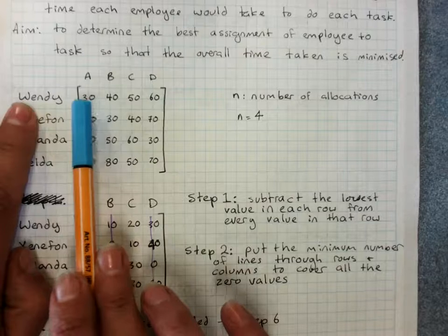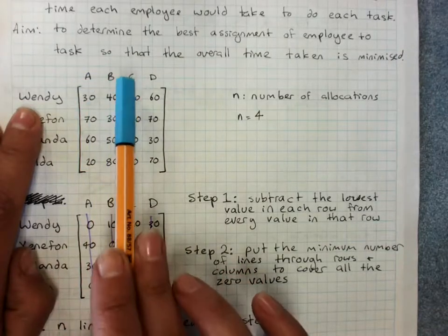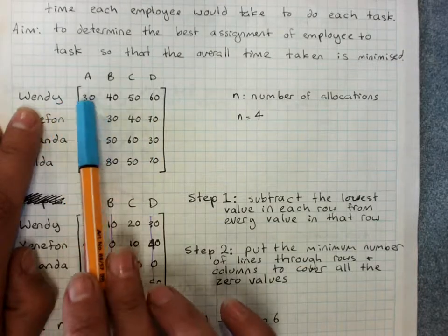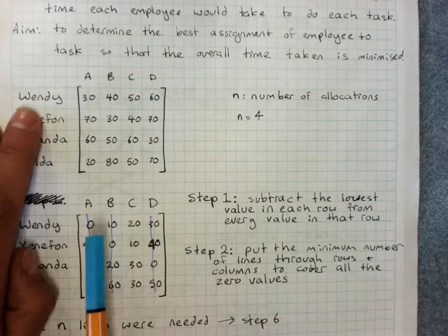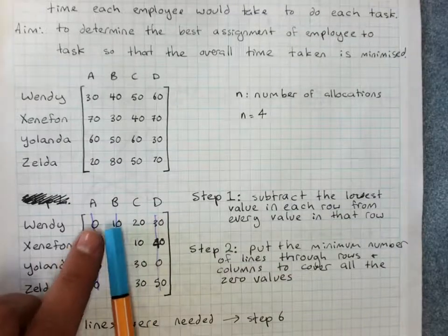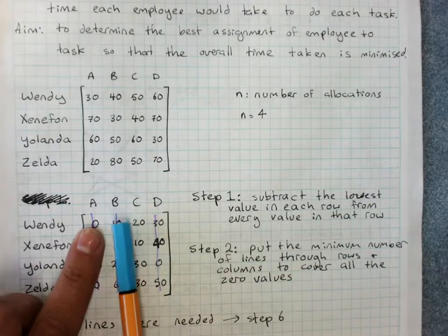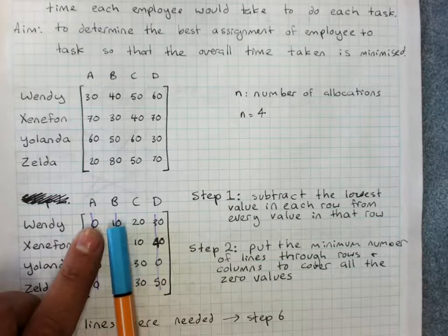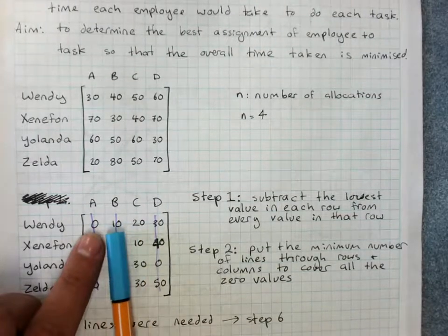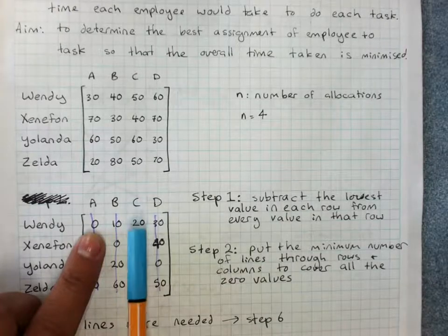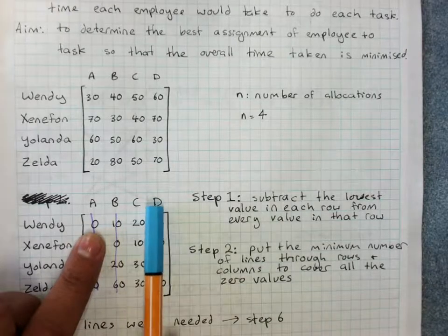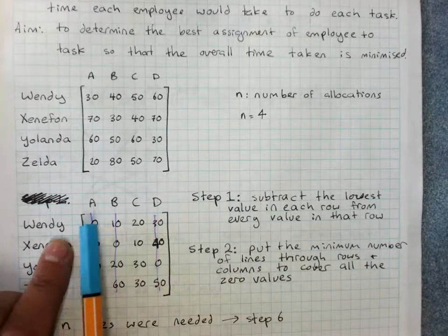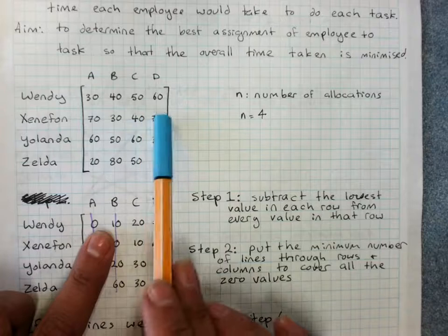Wendy could do A at 30, B at 40, C at 50 or D at 60. So when we subtract 30 from each of these what we're saying is that she could do A, B would take her 10 minutes longer, so the relative cost of B compared to A is 10 minutes. C would take her 20 minutes longer.